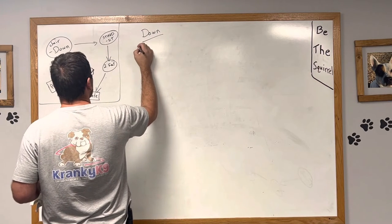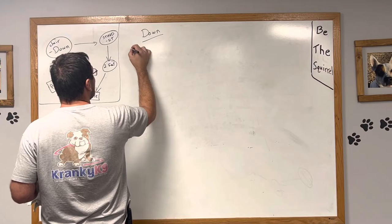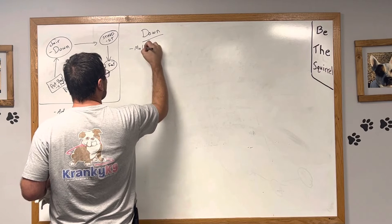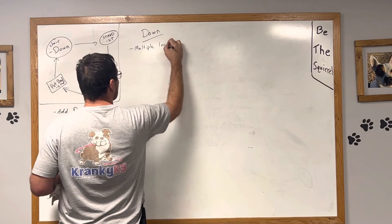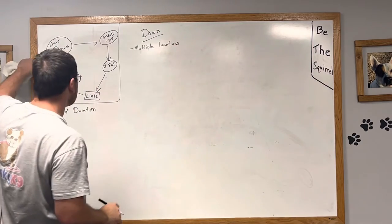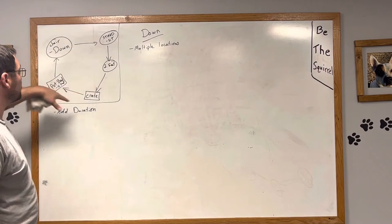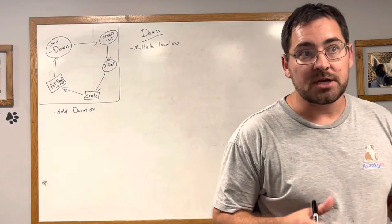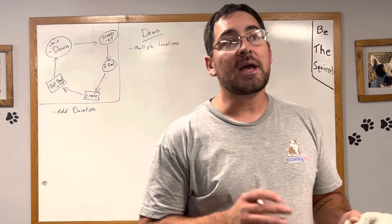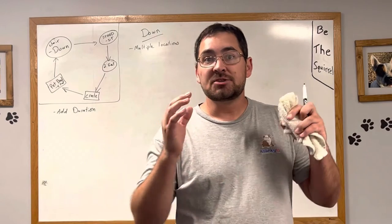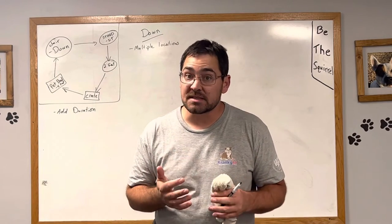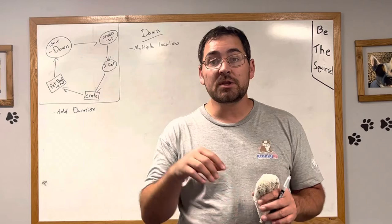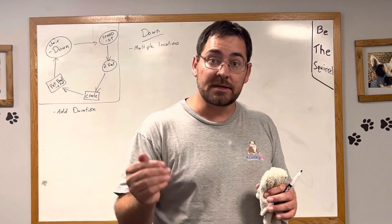So we're going to add duration. The next thing that we're going to want to do with our down is we're going to want to start to do it in multiple locations. Since you only had one down in your circuit here, you probably more than likely did it at the same chair every single time all week long. So the dog may have some kind of an idea that that chair that you use has significance to it, but it doesn't. The significance is in the fact that the human has sat down.